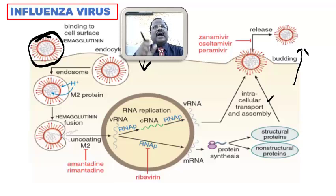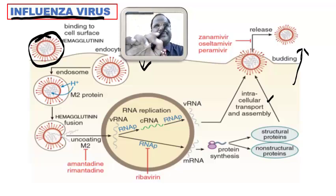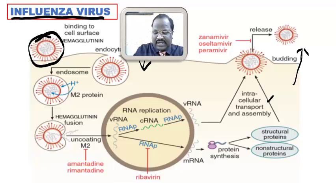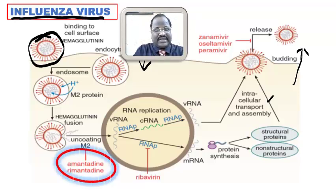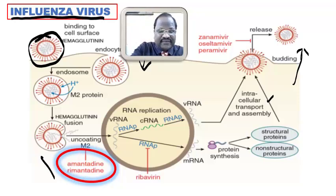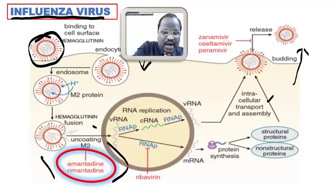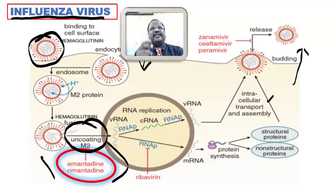There are some drugs that inhibit the uncoating of influenza virus — for example, amantadine and rimantadine. These two drugs are very important. Their mechanism of action is they inhibit uncoating of the viral membrane, the M2 protein — the uncoating is blocked by amantadine and rimantadine.